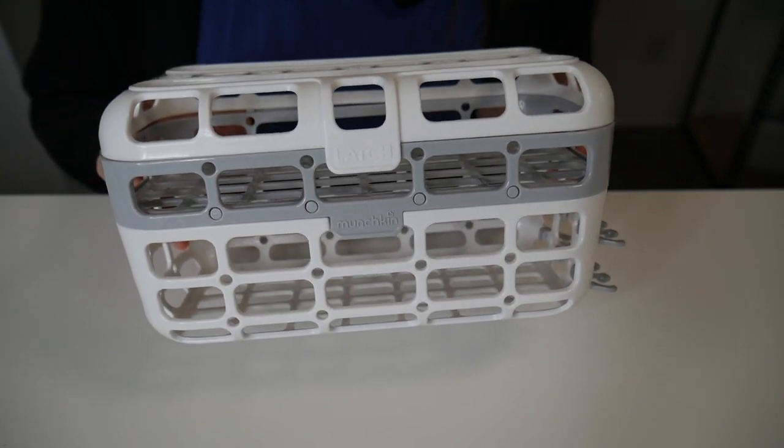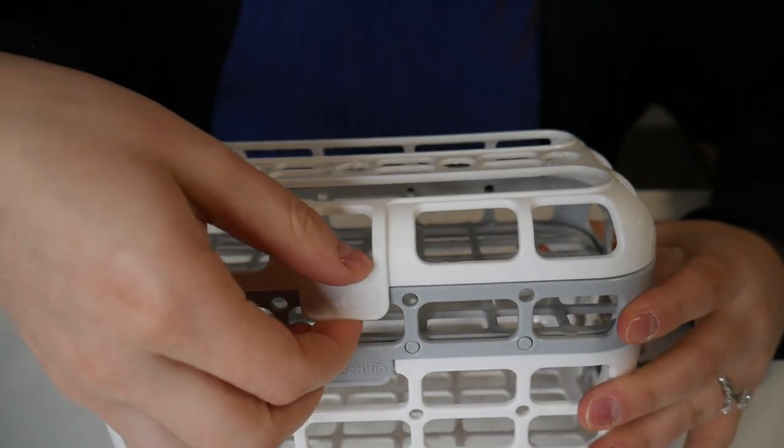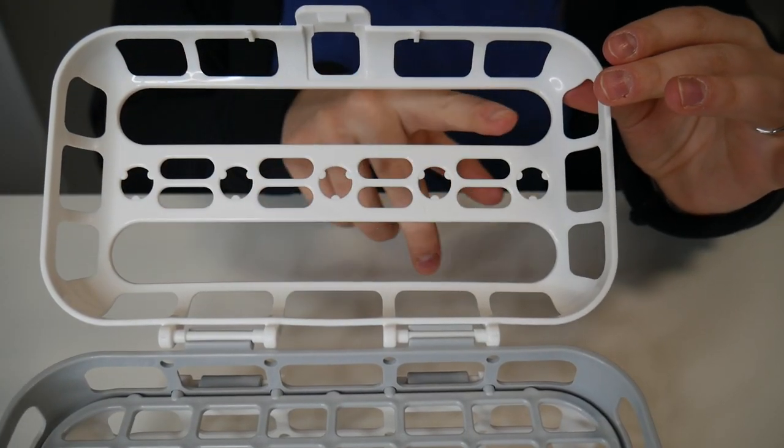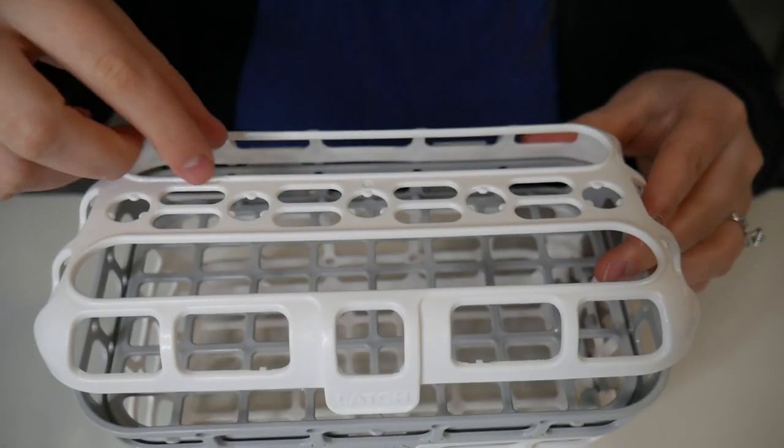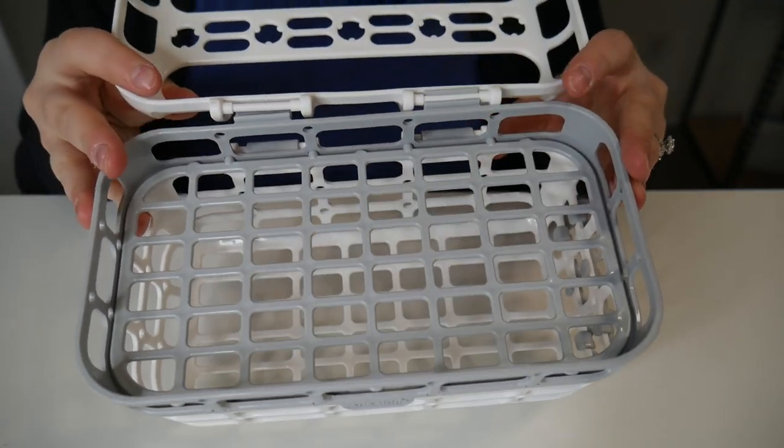It accommodates both standard and wide mouth bottles. I want to open this up and show you what this looks like. There are a couple of different racks. The top lid has some nice wide openings, so if you have a bottle nipple or something like that in here that you want to take out, you could easily squeeze that out without opening up the lid. I like that key feature.